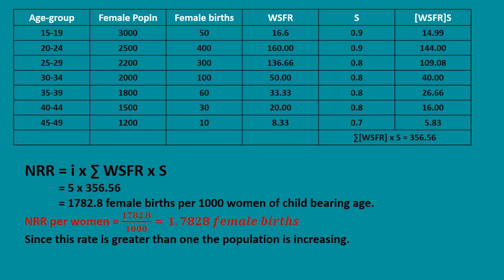For each age group, multiply WSFR by the survival rate S: 16.6 × 0.9 = 14.99; 160 × 0.9 gives the next value; 136.66 × 0.8 = 109.08. Adding all the (WSFR × S) values in the last column gives a summation of 356.56. Then i × 356.56, where i (the age group width) is 5, gives 5 × 356.56 = 1782.8.